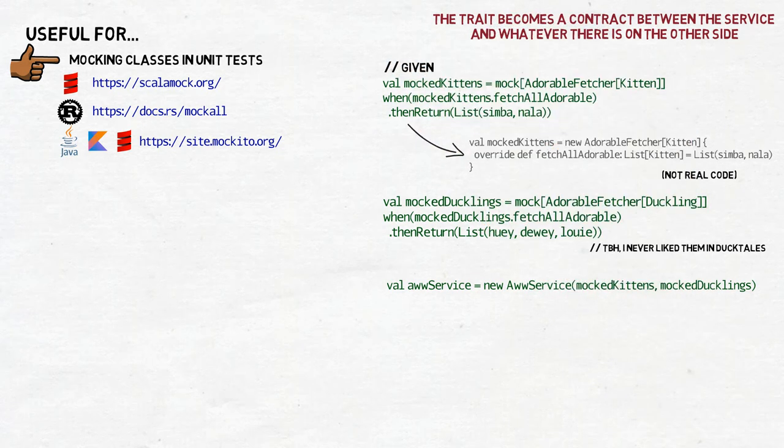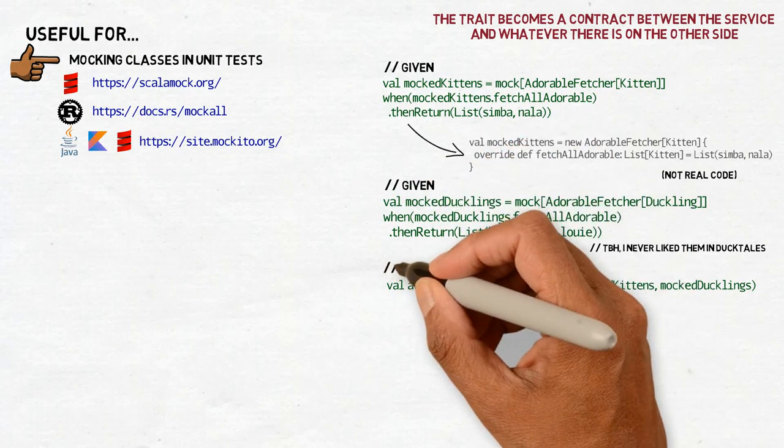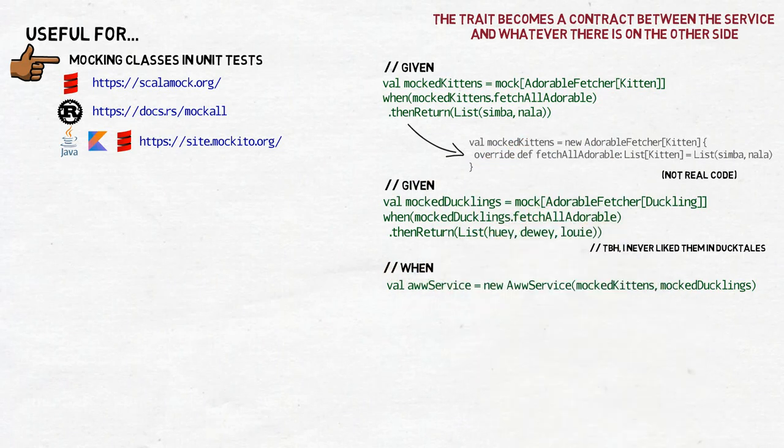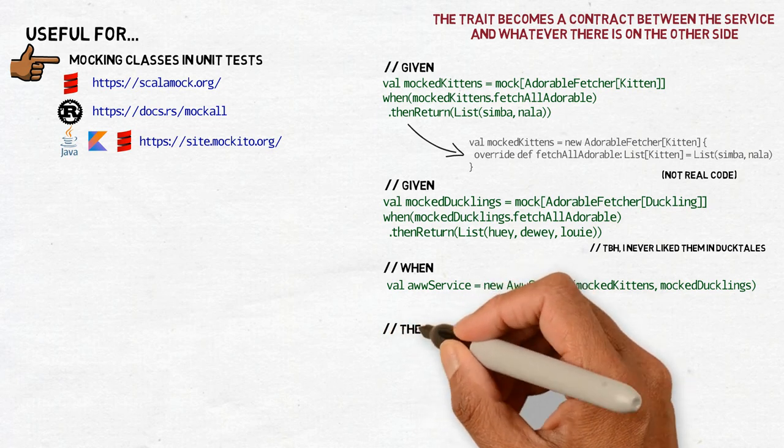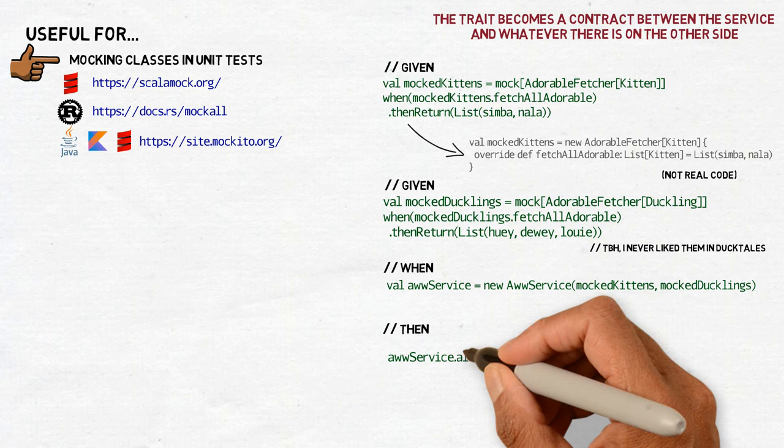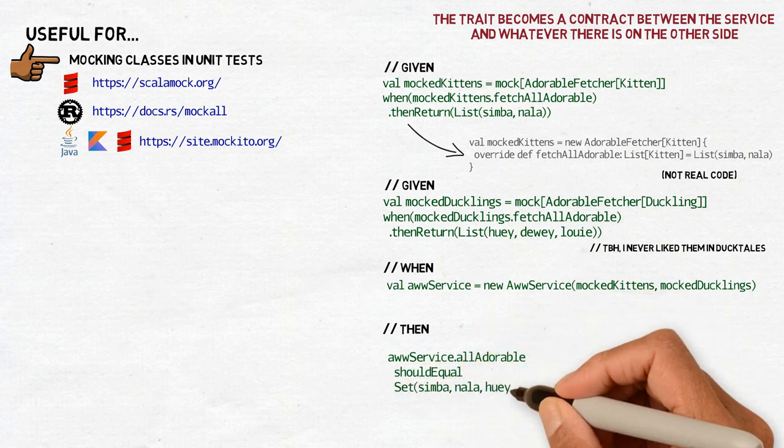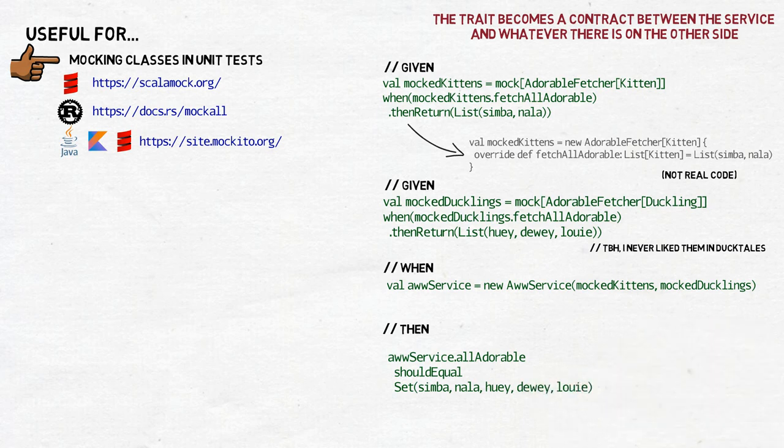Thanks to this, we can test the aweService method awe. The code of awe is the same, well, that's the whole point, that's what we want to test, but it will access our mocked implementations of FetchAllAdorable. In the end, we will get a list composed of our kittens and our ducklings from the mocking code, which will prove that the awe method works as it should.